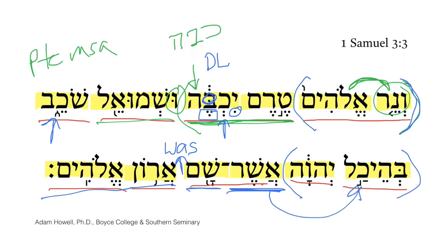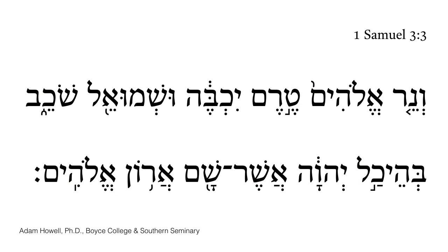Now that we have the translation under our belt, let's look at the Masoretic accents in order to avoid the idea that Samuel was lying down in the Holy of Holies — the area of the tabernacle or tent of meeting, where the Ark of God was. Most commentators do avoid saying that Samuel was in the Holy of Holies, knowing it was forbidden. While commentators usually get this theologically, the Masoretic accents actually make it clear grammatically and syntactically as well.